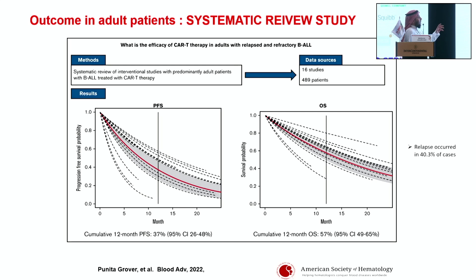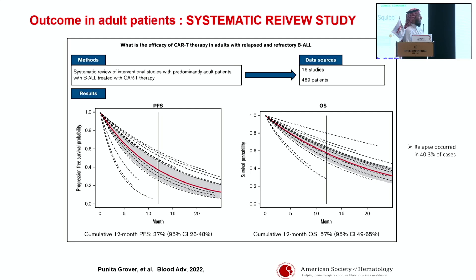The major problem is that while we can achieve cure in approximately 40–50% of patients, still around 40% of patients relapse post-CAR-T. We need to target this population to reduce the risk of relapse through interventions either pre-CAR-T or post-CAR-T.